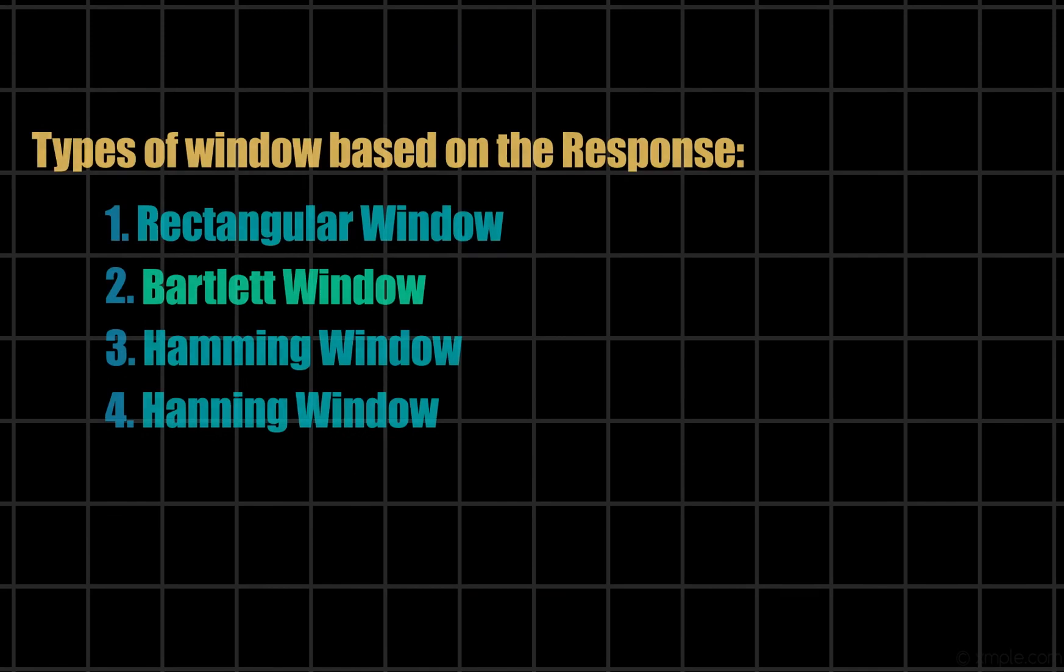Types of windows can be classified based on their response: Rectangular windowing, Bartlett windowing, Hamming windowing, and Hanning windowing. In this video we focus on Bartlett window.